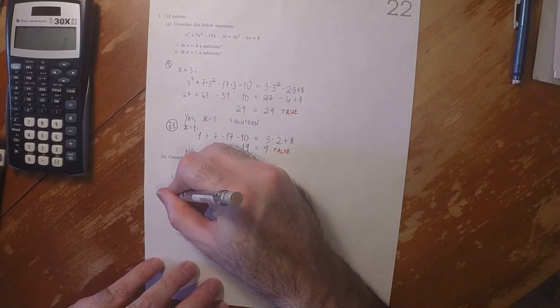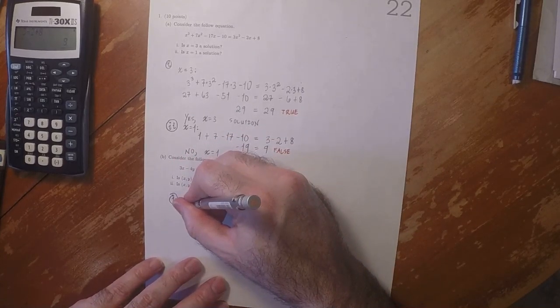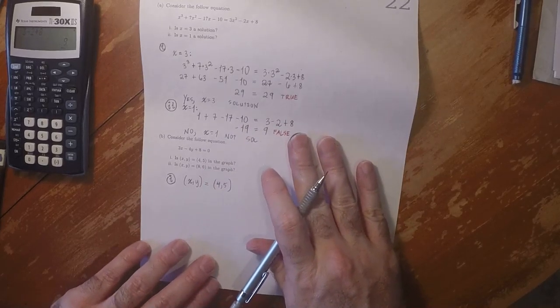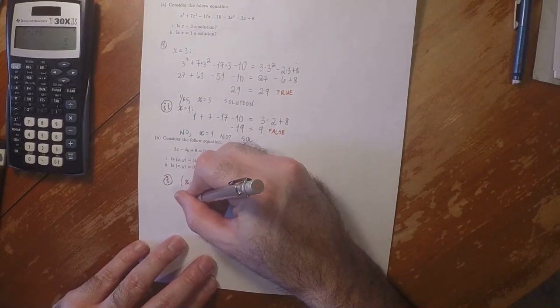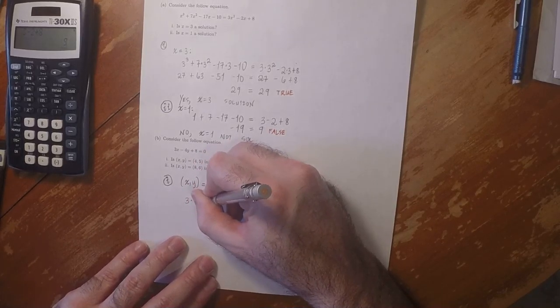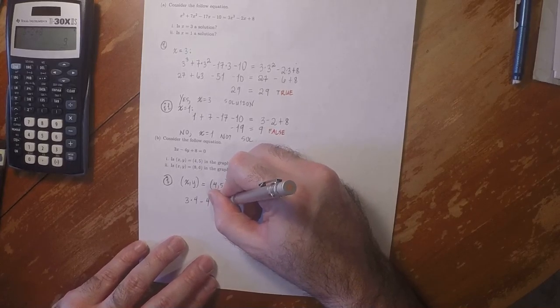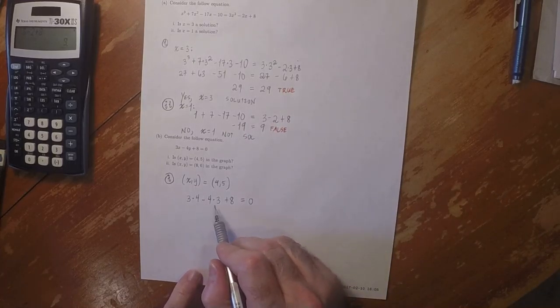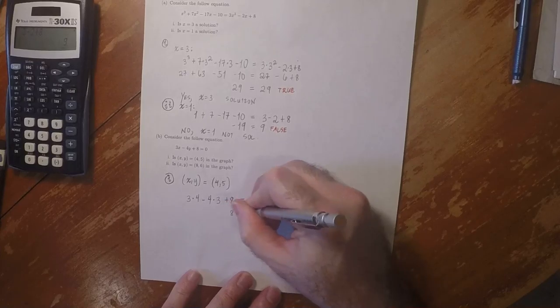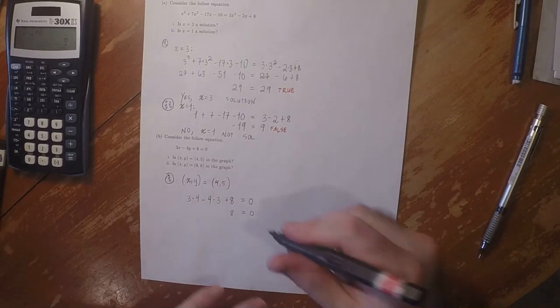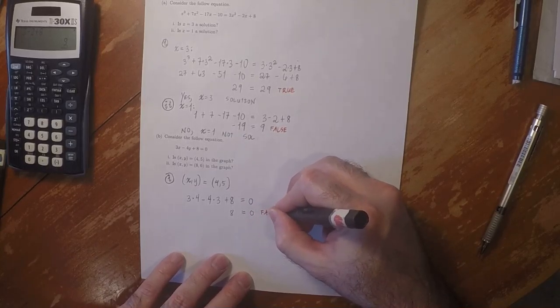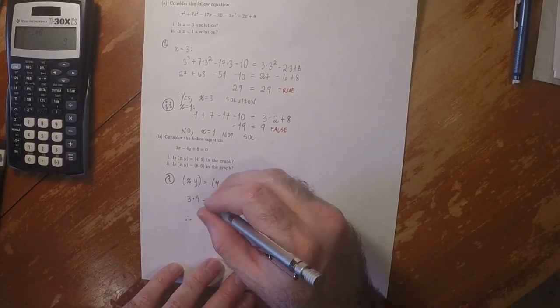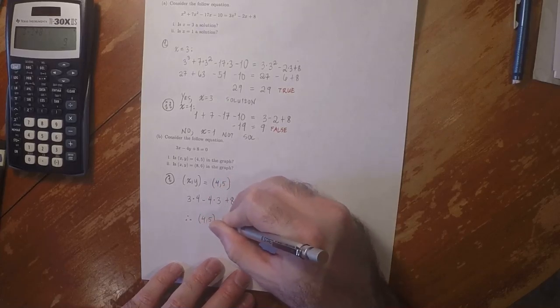So for part iii, we can check. How about x, y equal to 4, 5. 3 times 4 minus 4 times 3 plus 8 equal to 0. Well, that's 12 minus 12. So we're left with 8 equal to 0. This is logically false. And therefore, our conclusion is that 4, 5 is not in the graph.